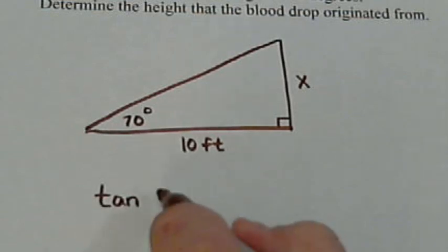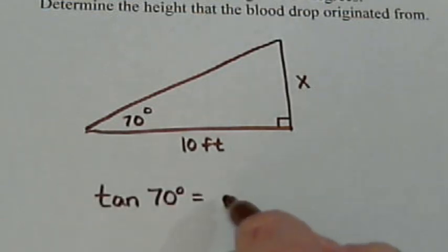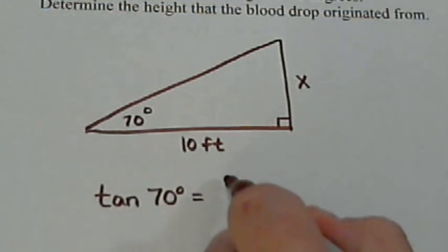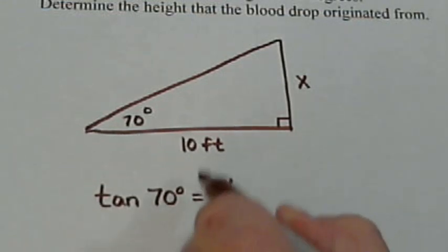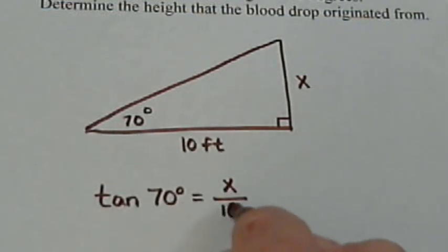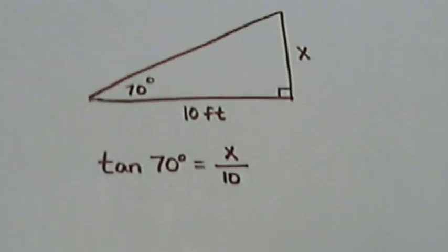And so what we say is that tangent of 70 degrees, the tangent is the opposite side divided by the adjacent side. So we have this formula.